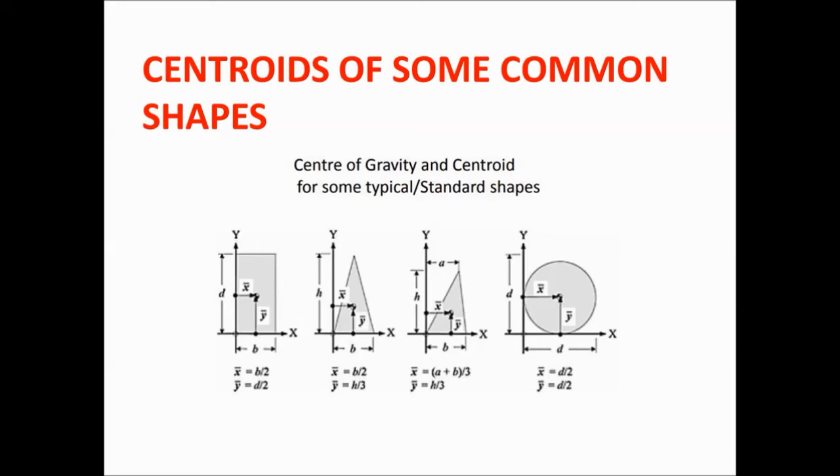From the top of the triangle it would similarly be h minus one third, that makes it two-third of h. Basically the centroid here from x axis, the distance measured is y-bar, that is the centroid of the body, and it will be h by three.